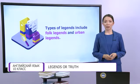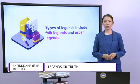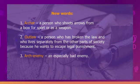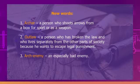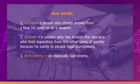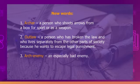Now we are going to read a text about the legends of Robin Hood. Before reading, I would like to introduce you to some new words. Listen to the words and repeat after me. Word number one: archer. An archer is a person who shoots arrows from a bow for sport or as a weapon. Number two: outlaw. An outlaw is a person who has broken the law and lives separately from other parts of society to escape legal punishment.